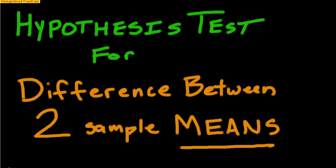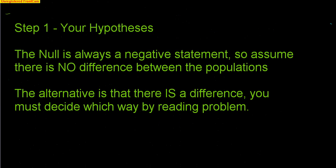This video is going to talk about a hypothesis test for the difference between two means. The idea is simple: we have two totally different samples, one with mean one and one with mean two, from two different populations, and we want to know if there is a difference between them. Statistics says there's always going to be a difference because the world just varies. Our job in a hypothesis test is to determine if that difference is significant or not.